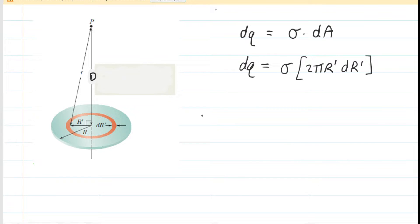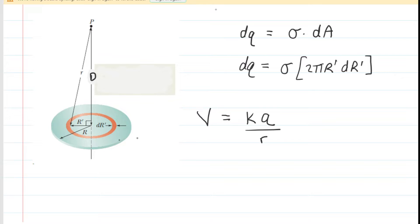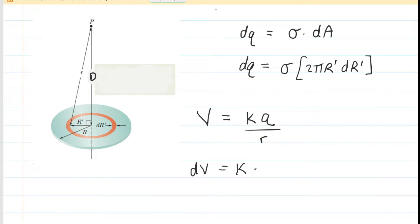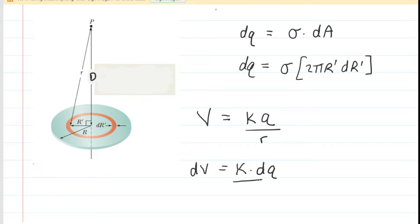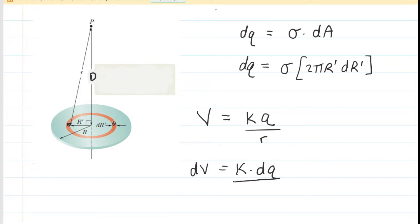We consider the expression for electric potential produced by a point charge: V = KQ/r, where r is the distance from the charge to the point in question. Our thin red ring produces a tiny potential dV at point P, so dV = K·dQ / r. Looking at the figure, we have a right triangle with hypotenuse r (lowercase) and legs D and R prime, so by the Pythagorean theorem: r = √(D² + R′²).